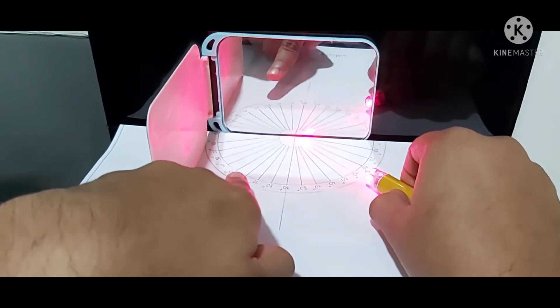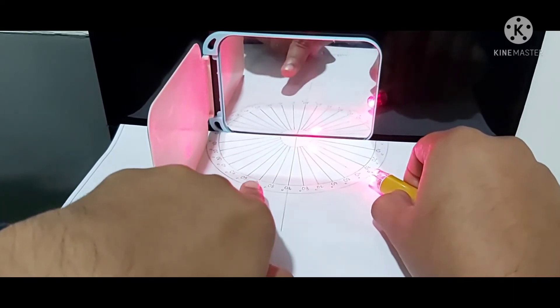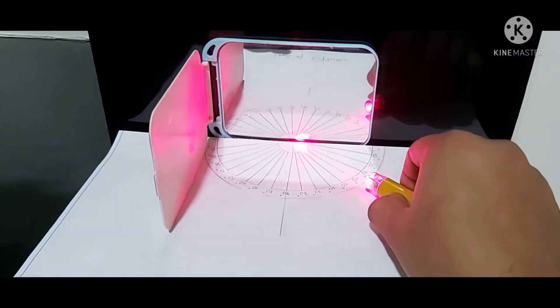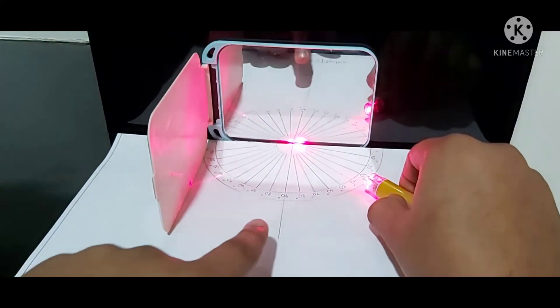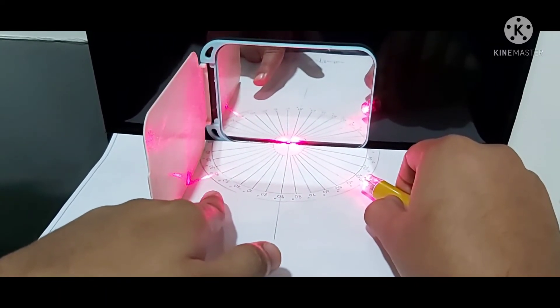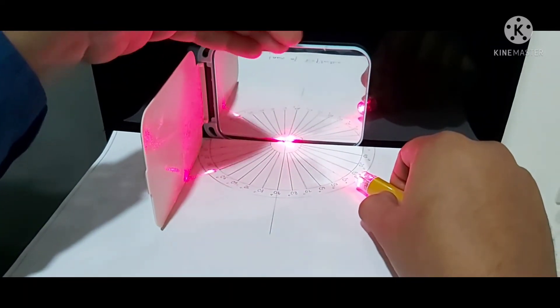The incident ray and reflected ray are on opposite sides of the normal. And third point: the incident ray, normal, and the reflected ray are on the same plane.